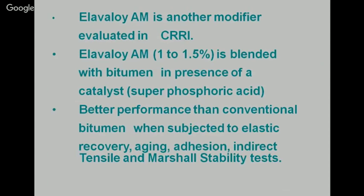Some polymers are reactive, not just dispersed in the bituminous phase. The commercial name Elvaloy is chemically reactive — when added in small quantity of 1 to 1.5% in the presence of a catalyst (super phosphoric acid), there is chemical bonding between polymer and bitumen, giving better bonding with aggregate. This provides better performance than conventional bitumen in elastic recovery, aging, adhesion, indirect tensile, and Marshall stability tests.